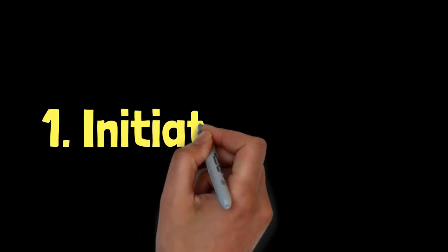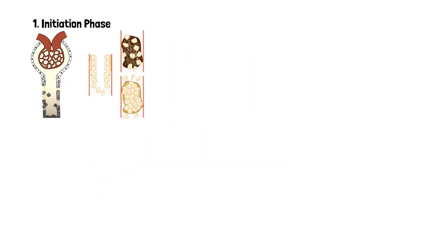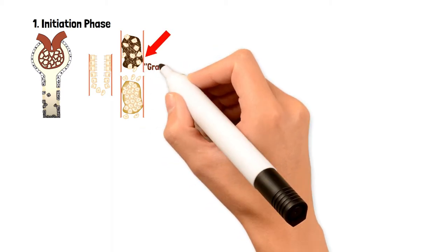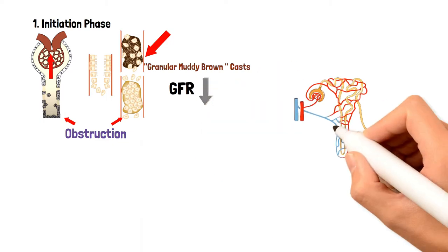Number one: the initiation phase. When ischemia hits the nephron, the renal tubules undergo apoptosis and cells break off into the lumen of the tubules. These shed cells pass along with urine and leave characteristic muddy brown casts in the urine sediment. They also accumulate in the lumen, causing obstruction, so urine cannot pass through freely. This obstruction sends back-pressure into the glomerulus and the GFR decreases even further.